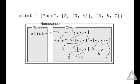Now let's consider a more complicated example. Here a list is assigned to the identifier xlist. This list is a container of three objects. The first element of that list is just the string one. The second element, however, is a list. It has two elements. The first element of that is the integer 2, but the second element is another list of two elements. And that contains the integers 3 and 4.